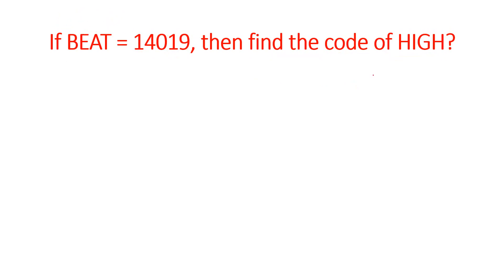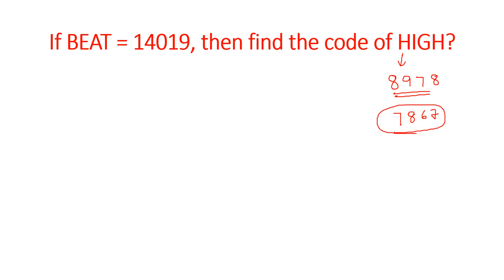Simply put: for HIGH, H is 8, I is 9, G is 7, H is 8. Applying the same rule — subtract 1 from each — we get 7, 8, 6, 7. So the answer is 7867.